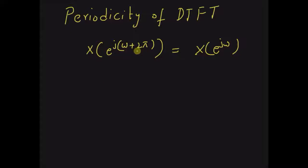That is, when a value 2π is added to the digital frequency ω, then the resulting discrete time Fourier transform complex value is exactly the same.